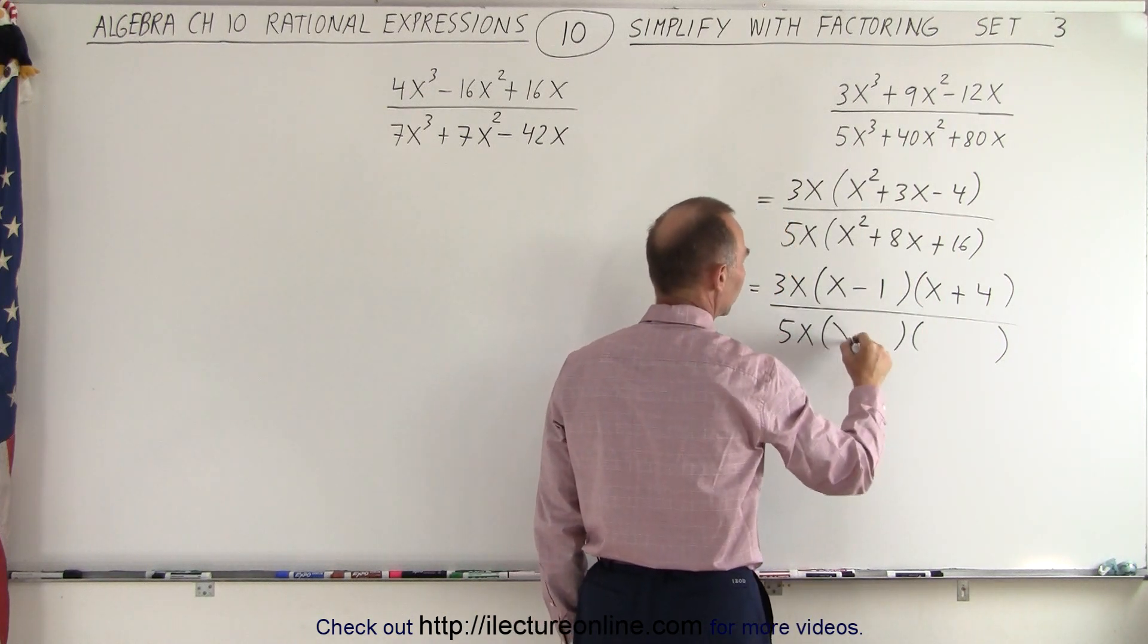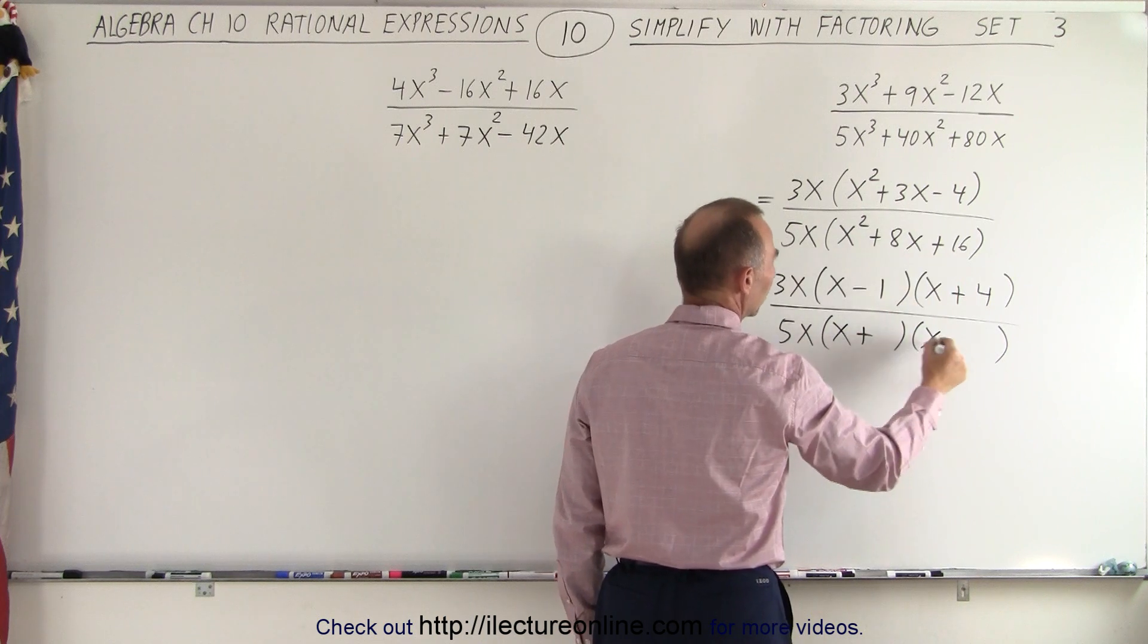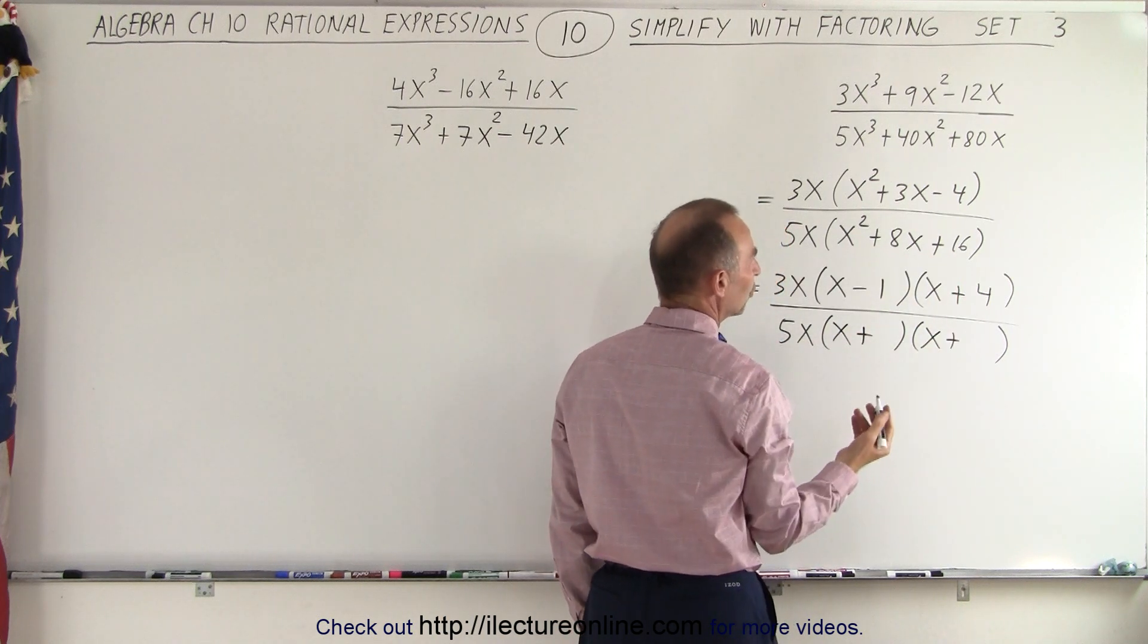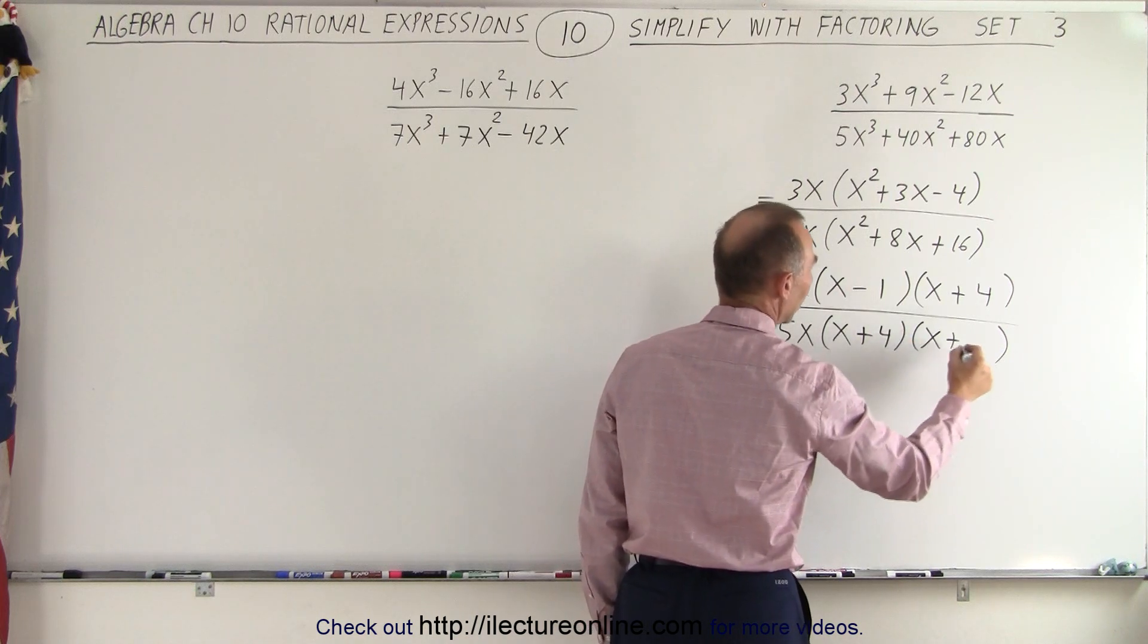In the denominator, we start with an x and an x. Since all the signs are positive, we need two plus signs. Looking for two numbers, when I multiply, I get 16. When I add, I get 8, so it's 4 and 4. So that was rather straightforward.